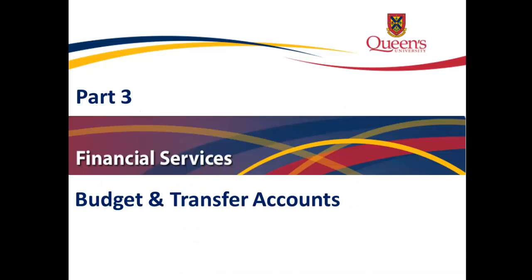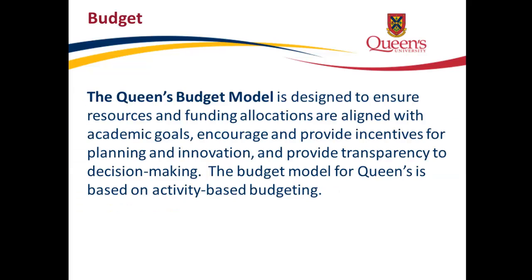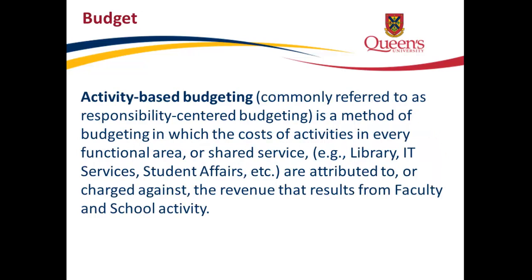Part 3: Budget and Transfer Accounts. The Queen's Budget Model is designed to ensure resources and funding allocations are aligned with academic goals, encourage planning and innovation, and provide transparency to decision-making. The budget model is based on activity-based budgeting — commonly referred to as responsibility-centered budgeting — a method in which costs of activities in every functional area or shared service, such as library, IT services, and student affairs, are attributed to or charged against the revenue resulting from faculty and school activity.